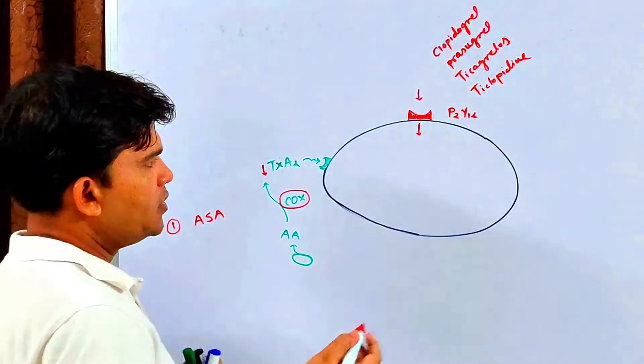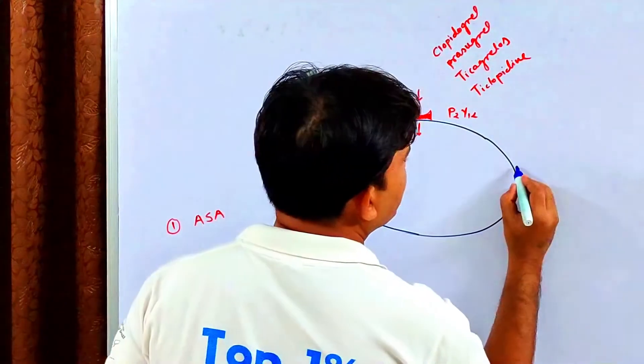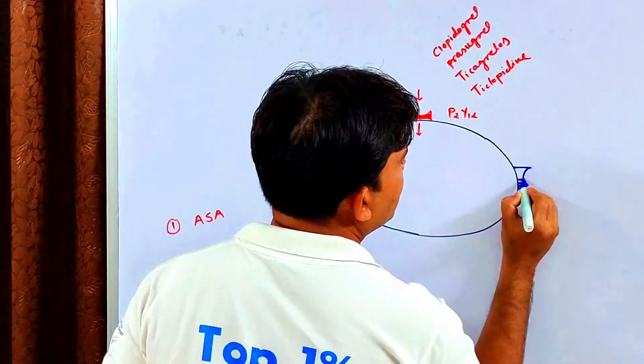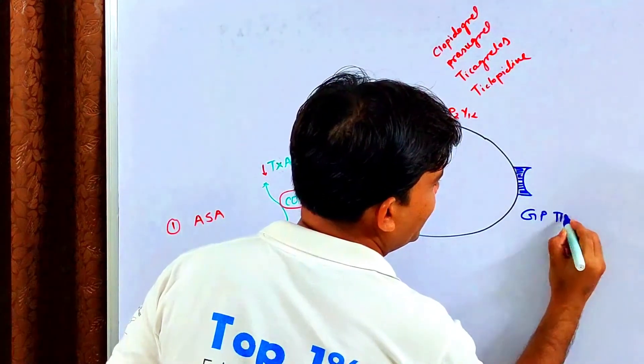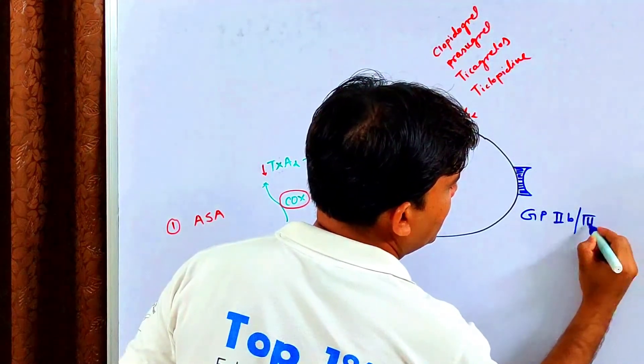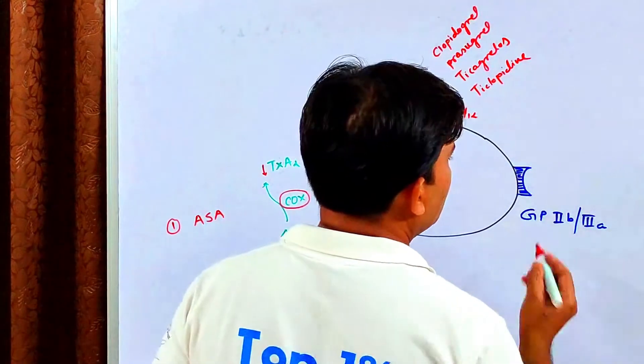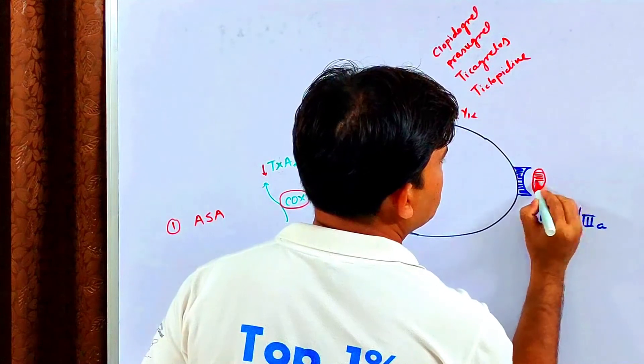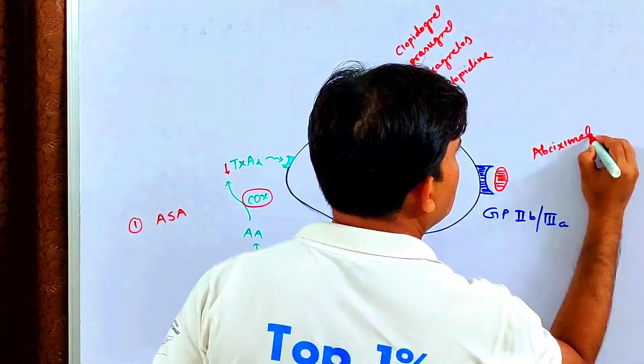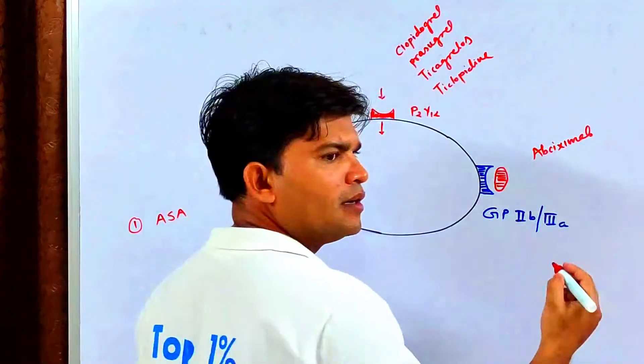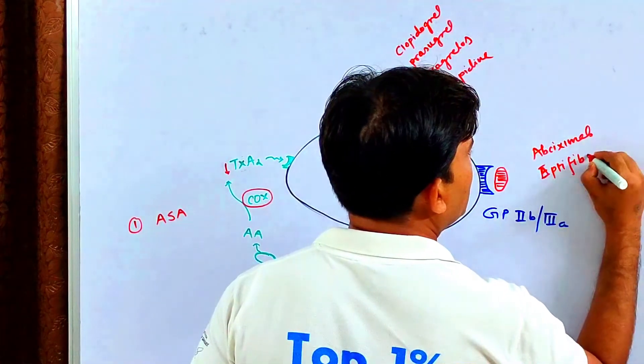Then after, platelets stick to another platelet. Which receptor? GP2B3A, right? And we have a drug that is directly GP2B3A receptor blockers, right? And these molecules are abciximab, eptifibatide, and tirofiban.